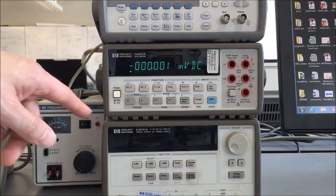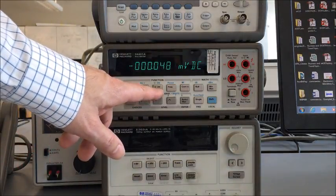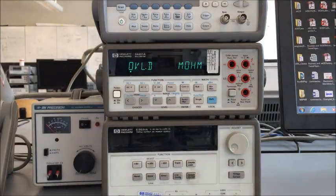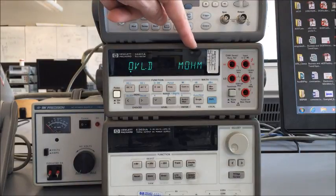If we want to measure resistance, we need to change the function. We push the ohm 2-wire button. Now we can see the display changes to measuring ohms.